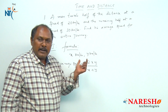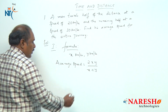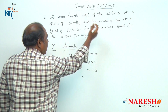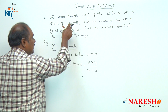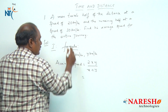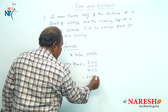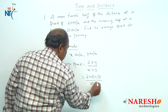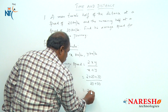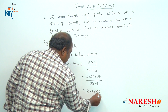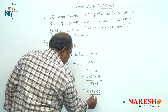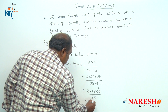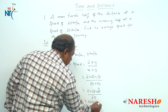Using this formula, let us solve the problem. The man is traveling the first half at 20 km per hour and the remaining half at 30 km per hour — that is, he is traveling two equal distances. So the average speed is 2 × 20 × 30 divided by (20 + 30), which is 2 × 20 × 30 divided by 50, giving 1200 divided by 50, which equals 24 km per hour.